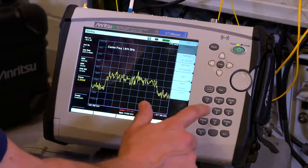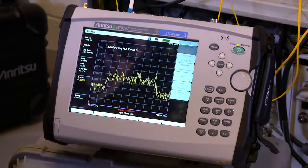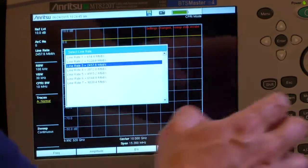To make CPRI measurements, the user simply enters key parameters to match the tester configuration with the link, including the antenna container number and CPRI line rate.